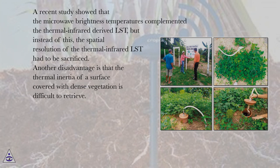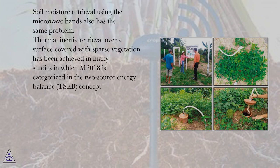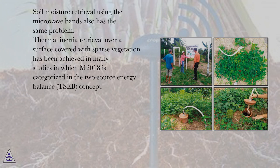Another disadvantage is that the thermal inertia of a surface covered with dense vegetation is difficult to retrieve. Soil moisture retrieval using the microwave bands also has the same problem. Thermal inertia retrieval over a surface covered with sparse vegetation has been achieved in many studies, in which M2018 is categorized in the two-source energy balance, TSEB, concept.